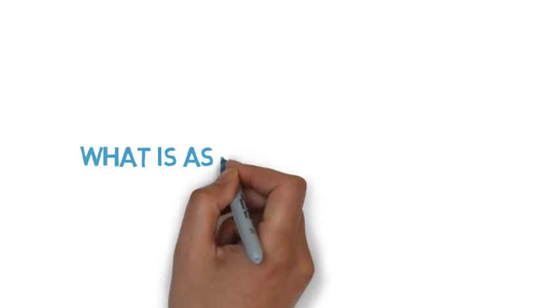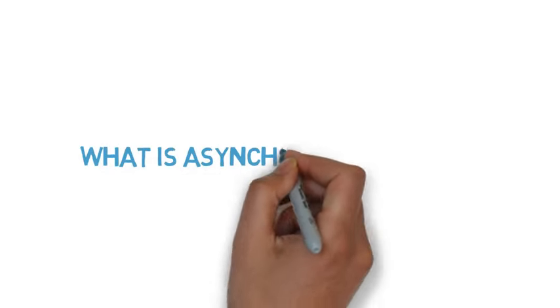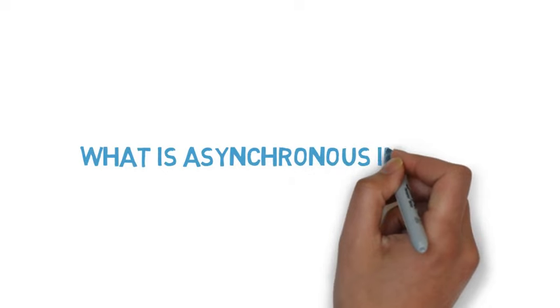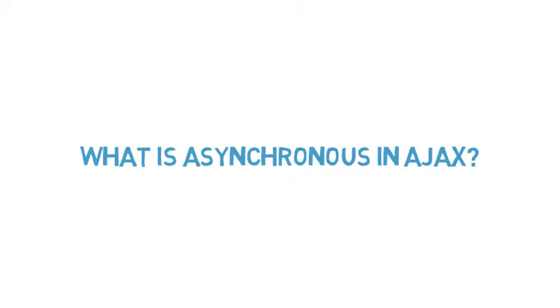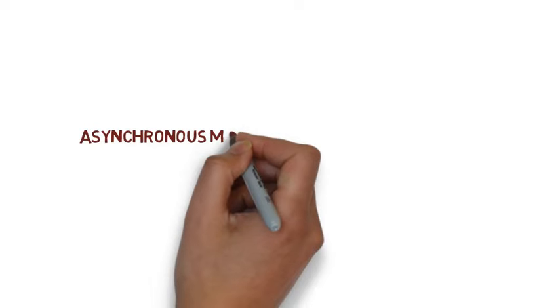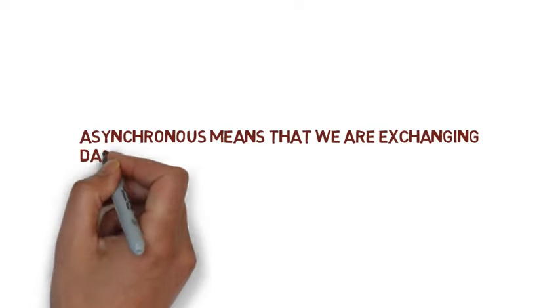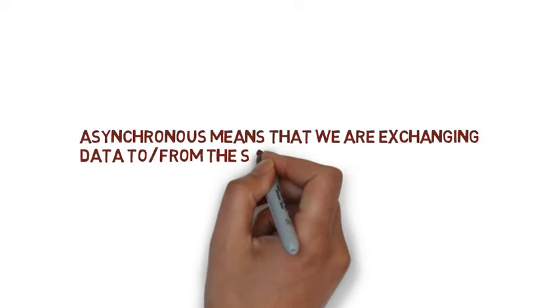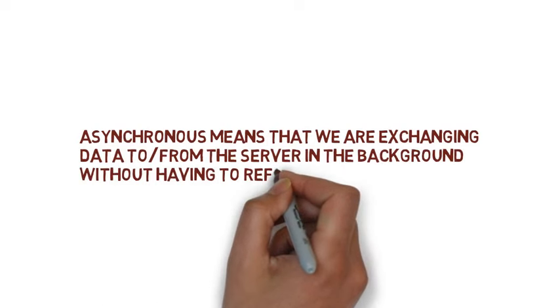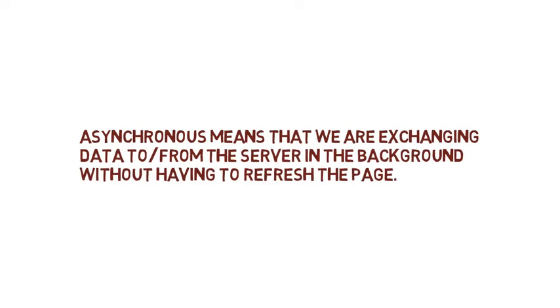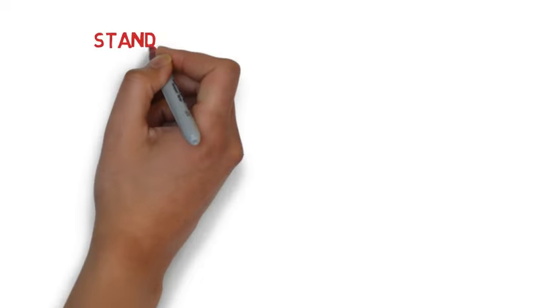So what is asynchronous in Ajax? Asynchronous generally means that we are exchanging data from the server, or posting data to the server, in the background without having to refresh the page again and again. We are exchanging data in the background.